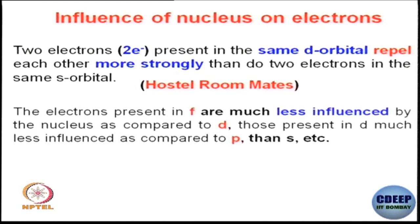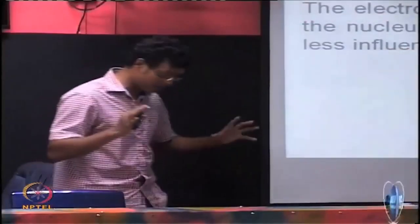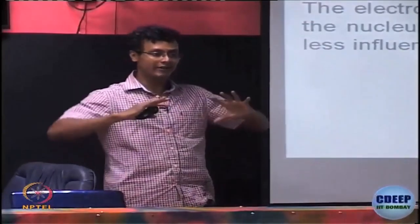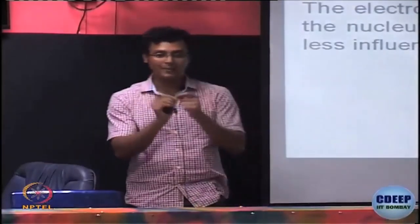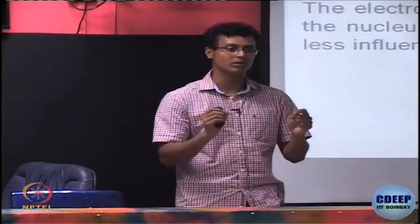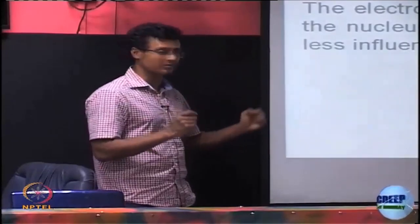So that is what I am trying to say — it is the hostile roommate analogy. Electrons present in f orbitals are obviously much less influenced by the nucleus compared to d. Electrons in s orbitals are much more involved with the nucleus; p orbital electrons are a little bit less involved; d orbital electrons are further less involved; and f electrons are the least involved with the nucleus. Therefore, the repulsion among f electrons will be much more compared to any two electrons in any other orbital.